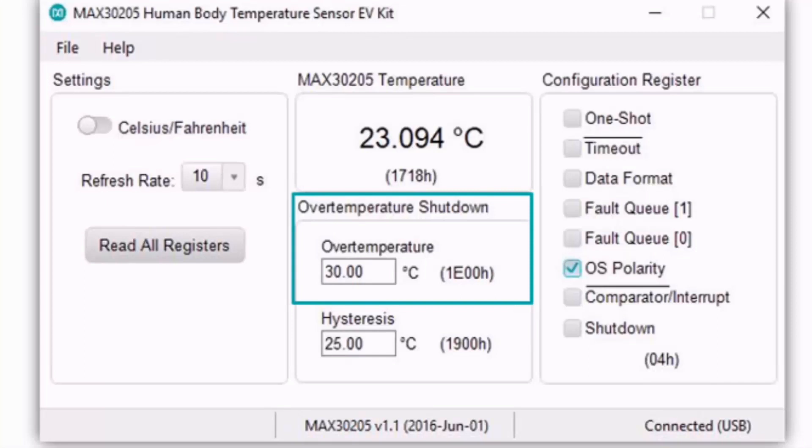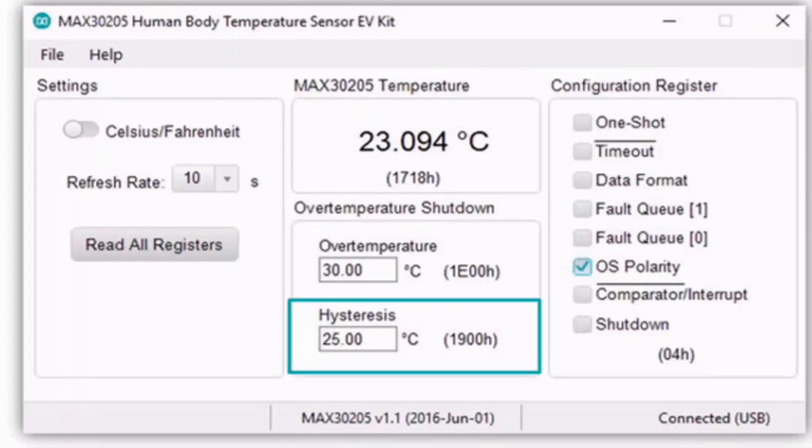Next we can set our threshold and hysteresis values. OS will assert when the threshold value has been passed, switching on our fan. After the temperature is dropped below our hysteresis value, OS will deassert and the fan will switch off.